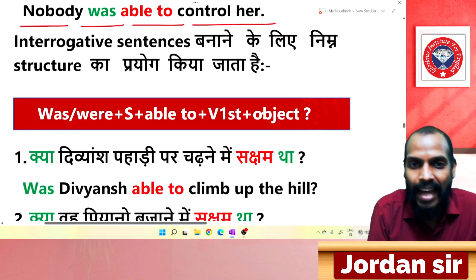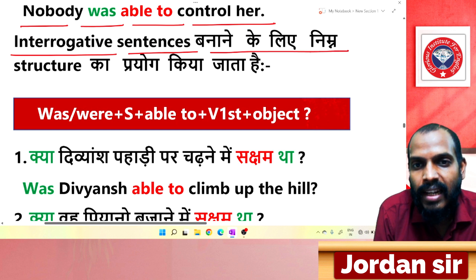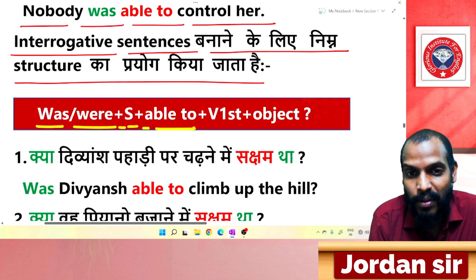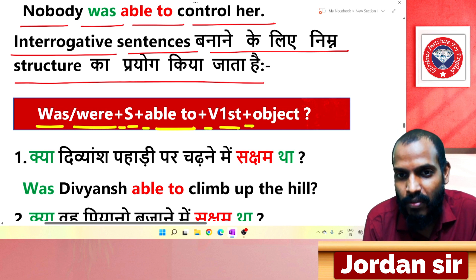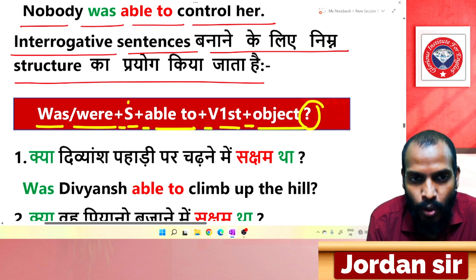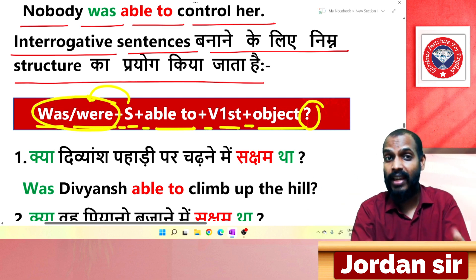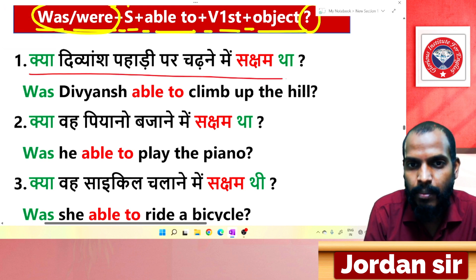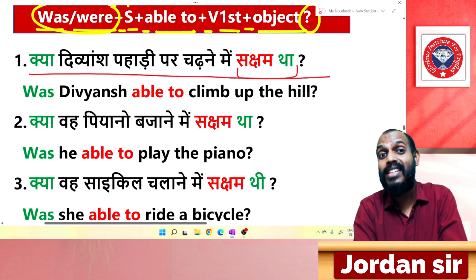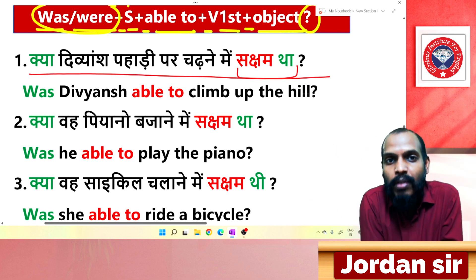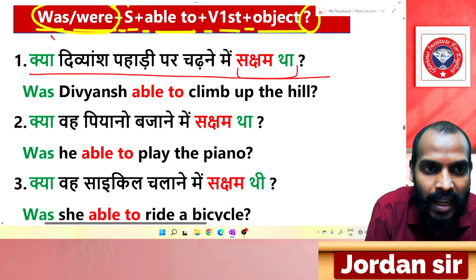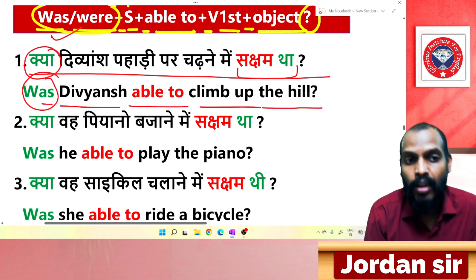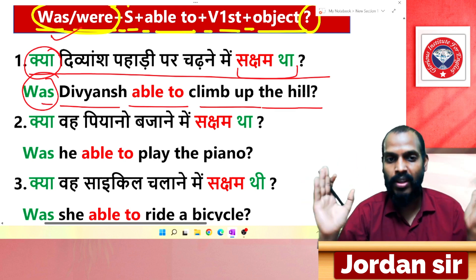Now let's look at interrogative sentences. The structure is: Was/Were + subject + able to + verb (first form) + object + ? The helping verb 'was' or 'were' comes before the subject. Example: 'क्या दिव्यांश पहाड़ी पर चढ़ने में सक्षम था?' Translation: 'Was Divyansh able to climb up the hill?' From 'क्या' and singular subject comes 'was' before the subject.